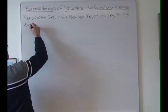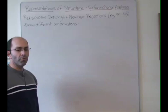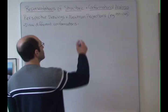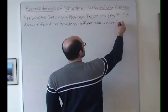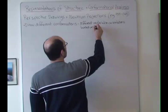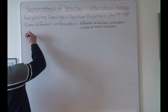We want to draw different conformations. When you're thinking about conformations, I want you to think about that there are different orientations of the molecule based on bond rotation — different molecular orientations based on bond rotation. And so we're going to focus on butane.